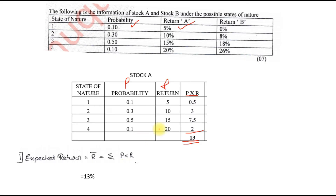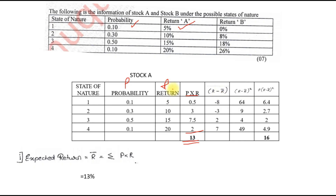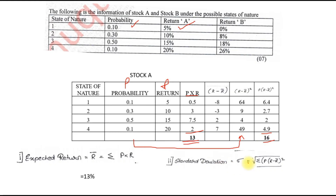Now to find the standard deviation, the next column required is R minus R̄ — that is all the returns minus R̄. So 5−13, 10−13, 15−13, and 20−13. Then the next column is (R−R̄)², so −8², −3², 2², and 7². The last column is P×(R−R̄)², giving values 6.4, 2.7, 2, and 4.9, totalling 16. That value of 16 is the variance. Standard deviation = √(ΣP×(R−R̄)²) = √16 = 4. So the expected return for Stock A is 13% and the standard deviation is 4.